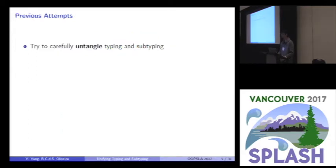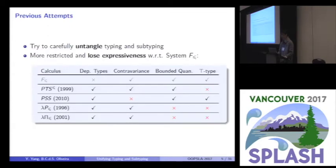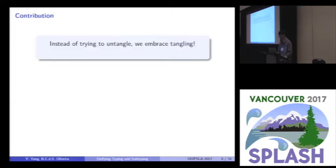There are several previous studies that try to deal with this complex system. They all try to carefully untangle typing and subtyping in some ways. The result is that the calculus becomes kind of restricted and loses some expressiveness when compared to the simpler calculus system F sub. System F sub features three main features including contravariance, bounded quantification, and top types. However, these previous attempts cannot do these three features at the same time.